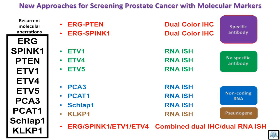Now I will talk about prostate cancer molecular markers and how we can detect them at the tissue level by combining IHC and RNA in situ hybridization. There are several markers identified in prostate cancer, particularly the ETS gene fusions: ERG, ETV1, ETV4, and ETV5. These are ETS family gene rearrangements detected at varying frequency. These markers are expressed only in prostate cancer — and sometimes in high-grade PIN and low-grade cancer as well. Importantly, these markers are expressed only when there is a chromosomal translocation; otherwise, you don't see even a basal level of expression.